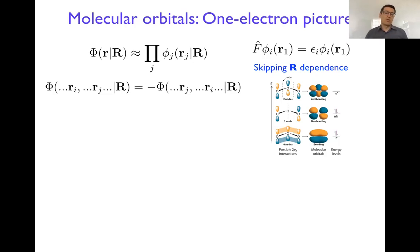Even though they are indistinguishable, when we change the coordinates of two particles, the wave function needs to change the sign. So the product will not account for that sign change.